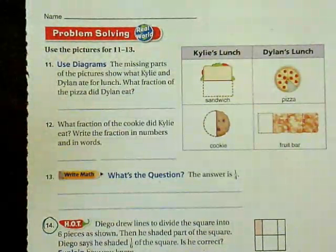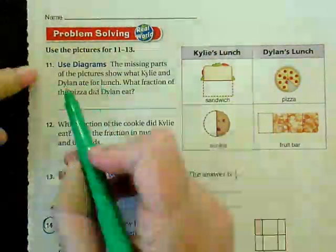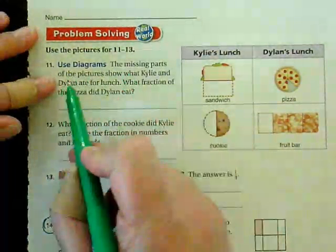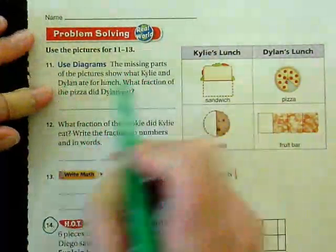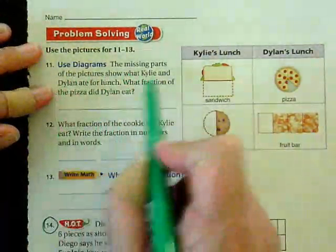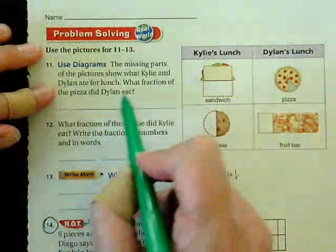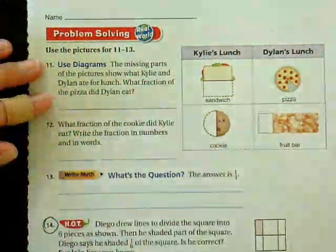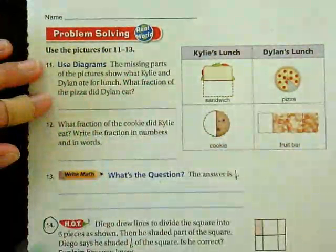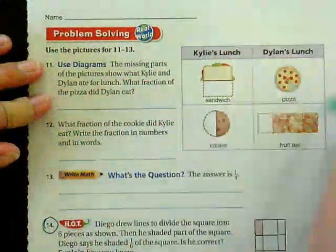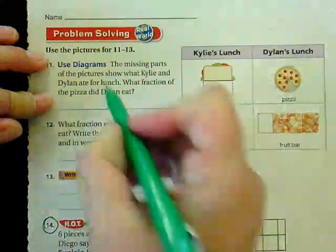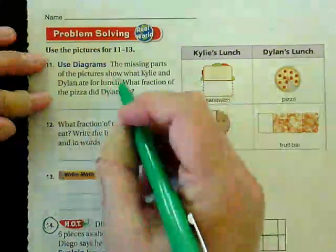Then we're going to read for information. Number 11 says, use diagrams. The missing parts of the picture show what Kylie and Dylan ate for lunch. What fraction of the pizza did Dylan eat? Okay, so this is our diagram. Let's read again to figure out what we're supposed to be looking for, because I understood all of the words.